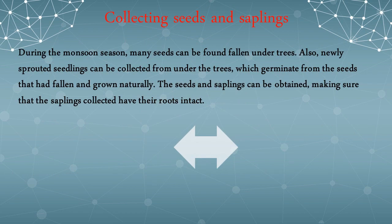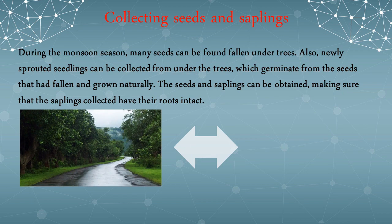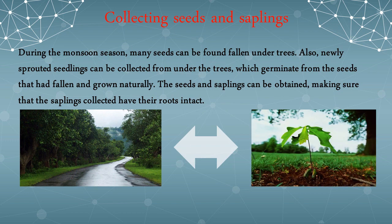The first step is collecting seeds and saplings. During the monsoon season, many seeds can be found fallen under the trees. Also, newly sprouted seedlings can be collected from under the trees, which germinate from seeds that had fallen and grown naturally. The seeds and saplings can be obtained while making sure that the saplings collected have their roots intact.